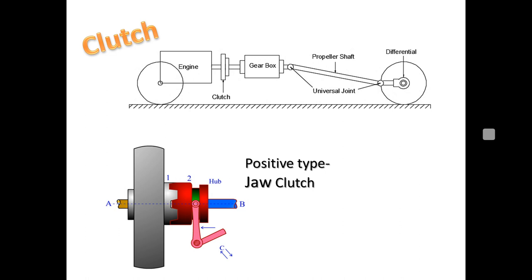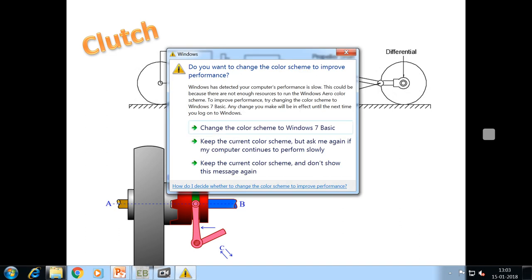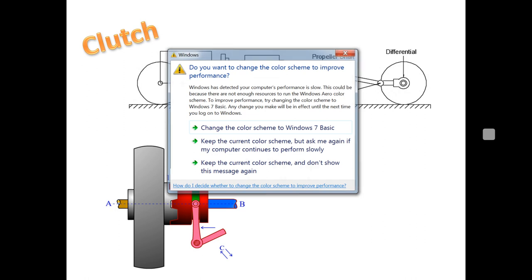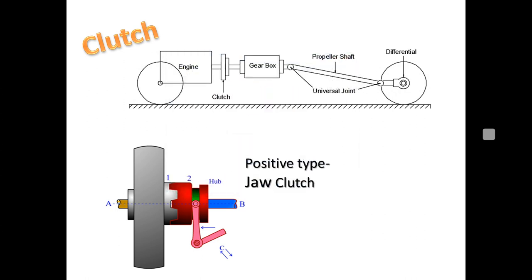A clutch is a mechanism which transmits torque or power from the driving shaft to the coincident driven shaft at the need of the operator, without stopping the driving shaft. The main difference between a clutch and a coupling is that a clutch can be engaged or disengaged at the operator's need, whereas a coupling is a fixed connection between two shafts. A clutch provides frequent connection and disconnection, whereas a coupling provides a permanent connection.